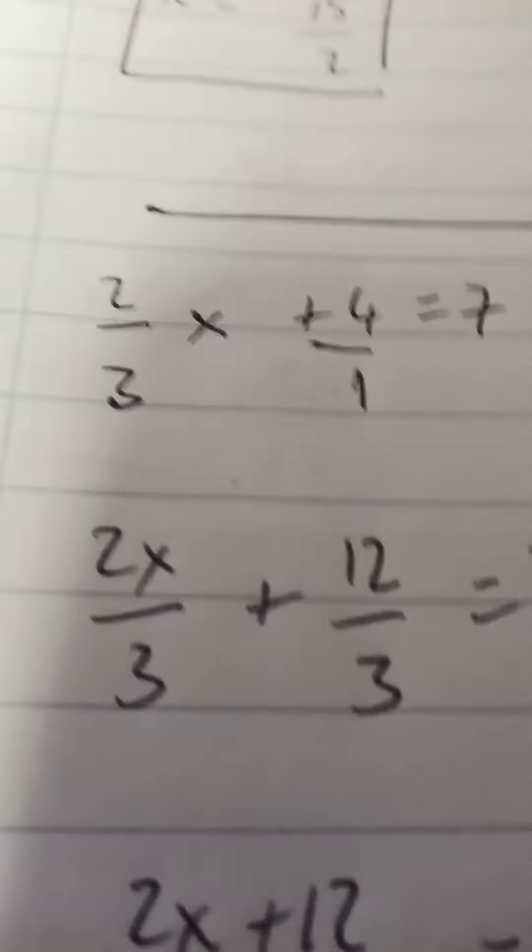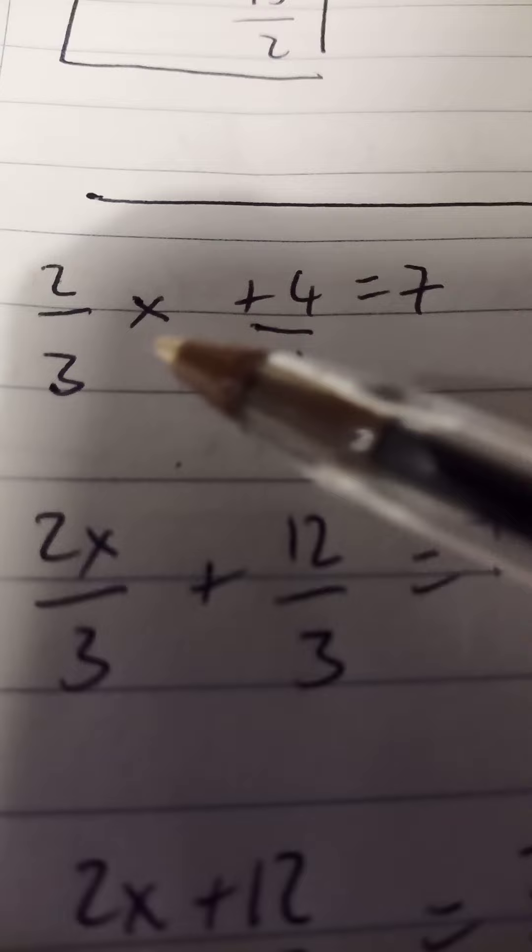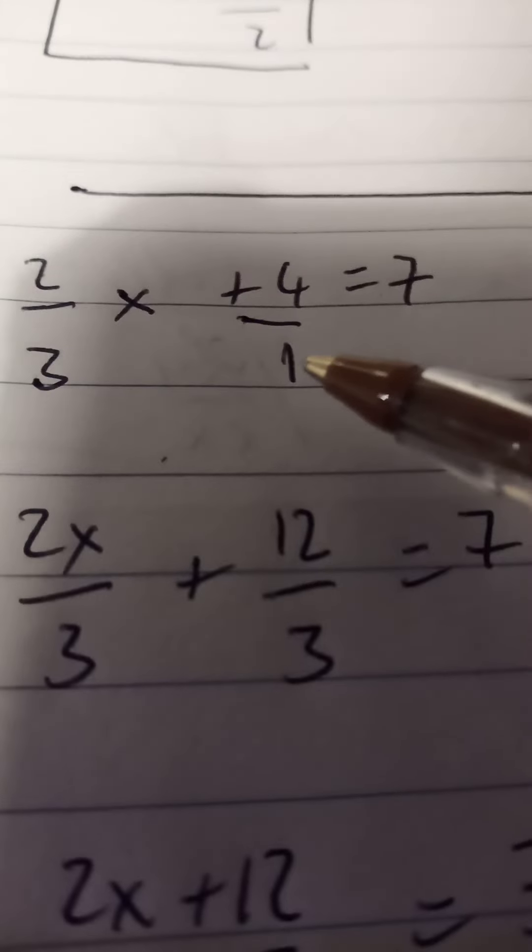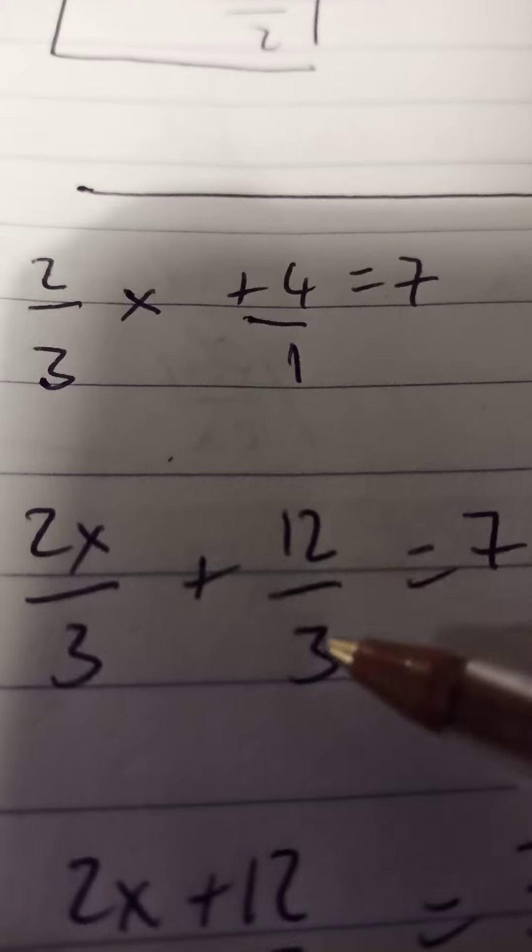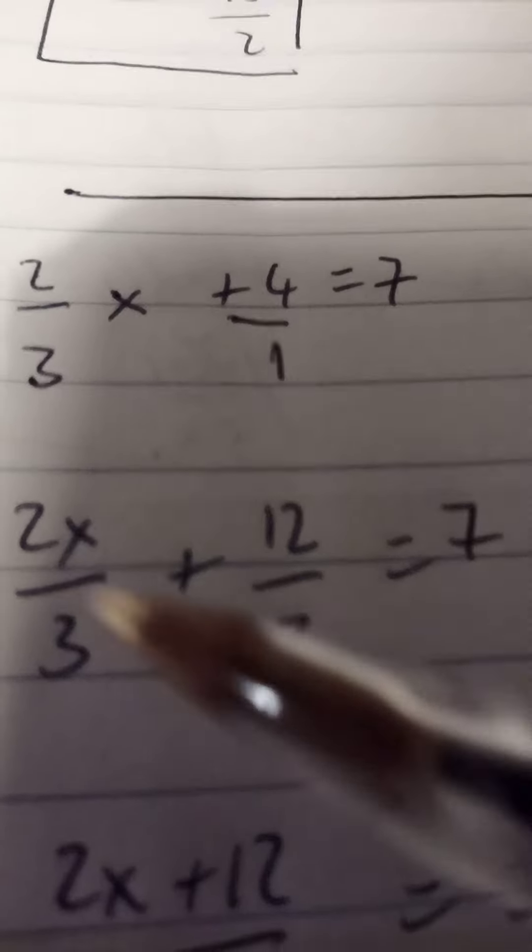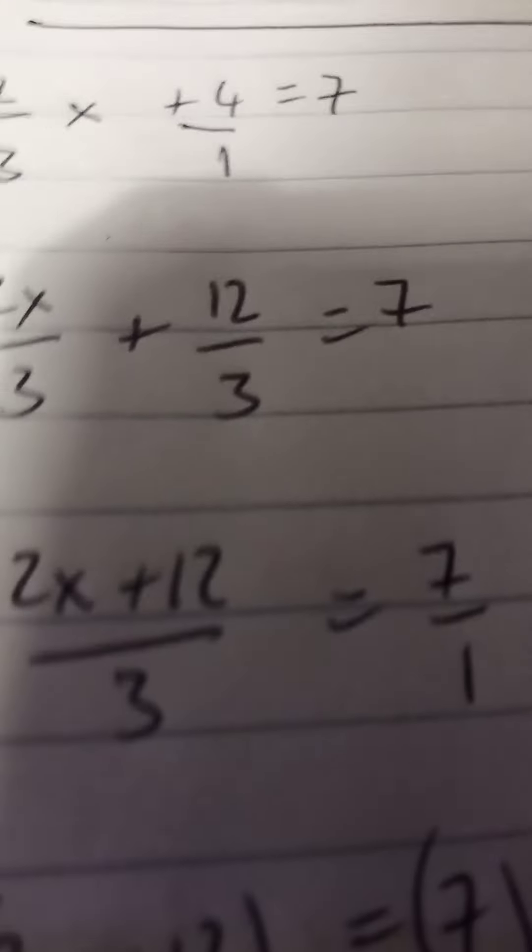Because we have different denominators here on the left hand side, what I'm going to do is get a common denominator. So I have 2 over 3x plus 4 over 1. The common denominator is 3, so 4 over 1 is the same as 12 over 3. Then I can draw these over a single denominator, so it'll be 2x plus 12 all over 3, and that's equal to 7 over 1.